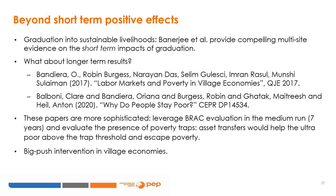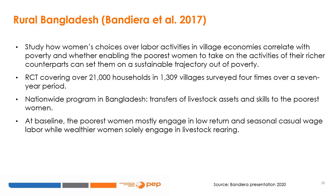These papers evaluate the presence of poverty traps over a longer term and test whether asset transfers can help the ultra-poor, above the trap threshold, escape poverty — big push interventions in village economies evaluated over the long term. Bandiera and co-authors studied BRAC's program in rural Bangladesh, examining how women's choices of labor activities in village economies correlate with poverty, and whether enabling the poorest women to take on activities of their richer counterparts can set them on a sustainable trajectory out of poverty. These randomized controlled trials covered 21,000 households in 1,309 villages surveyed four times over seven years.